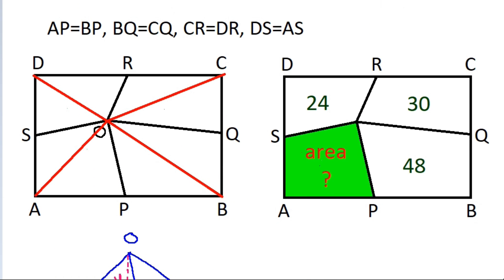So if this area is A then this will be A, and similarly if this area is B then this will be B. And if this area is C then this will be C, and if this is D then this will be D.